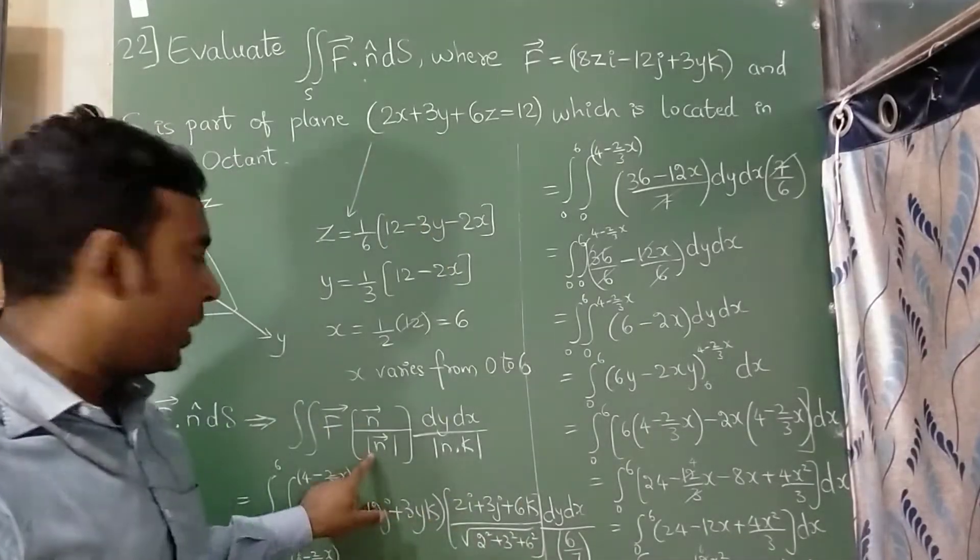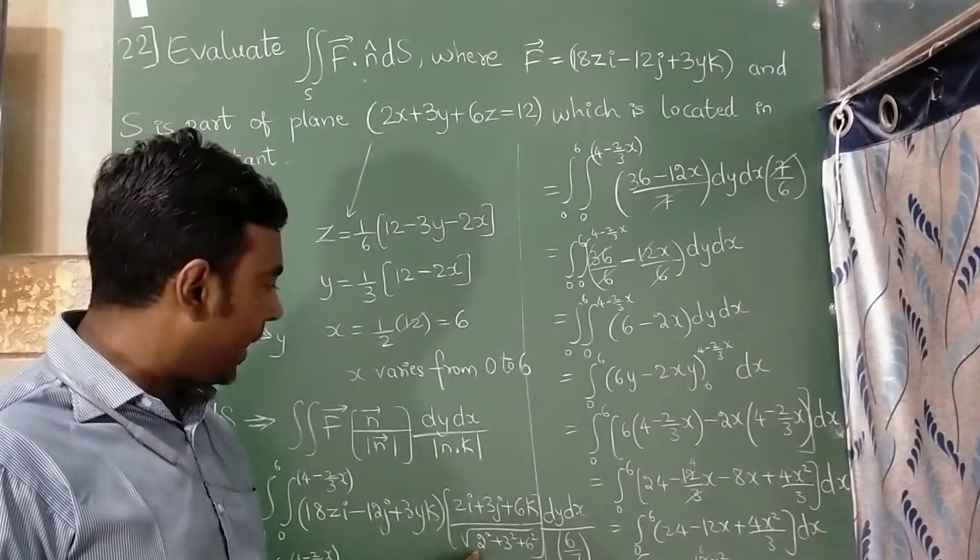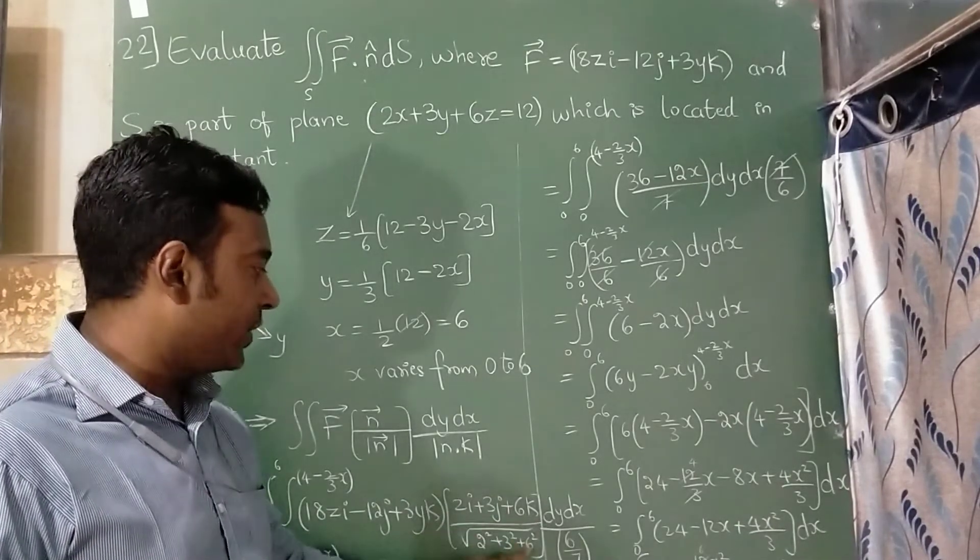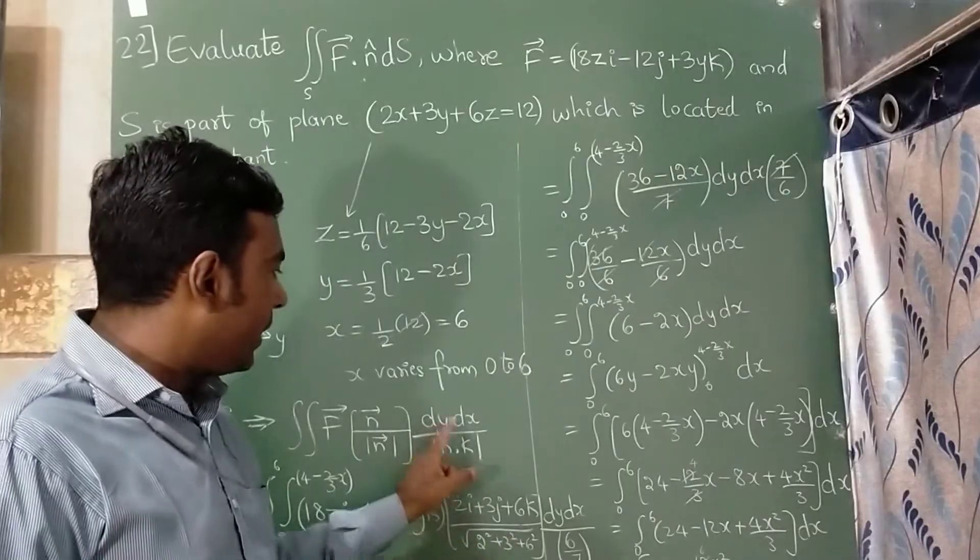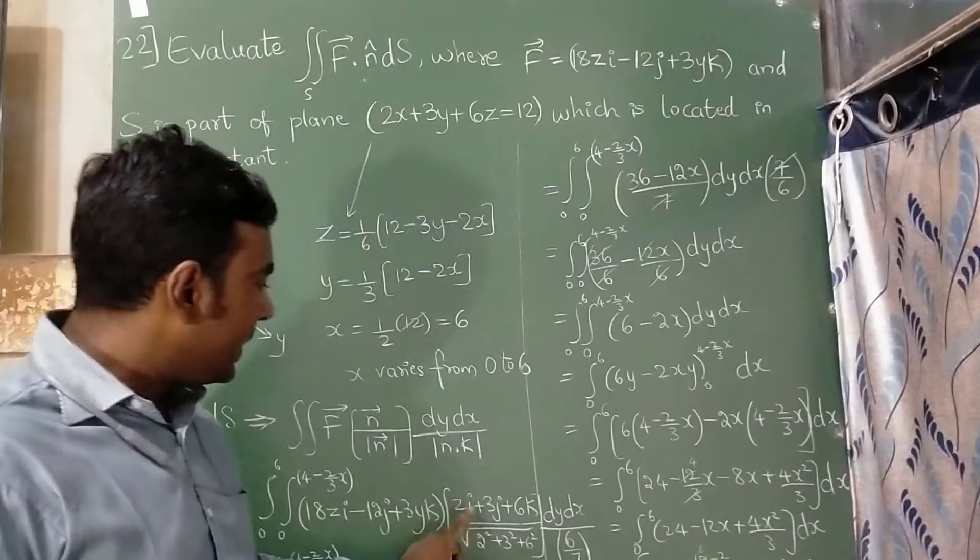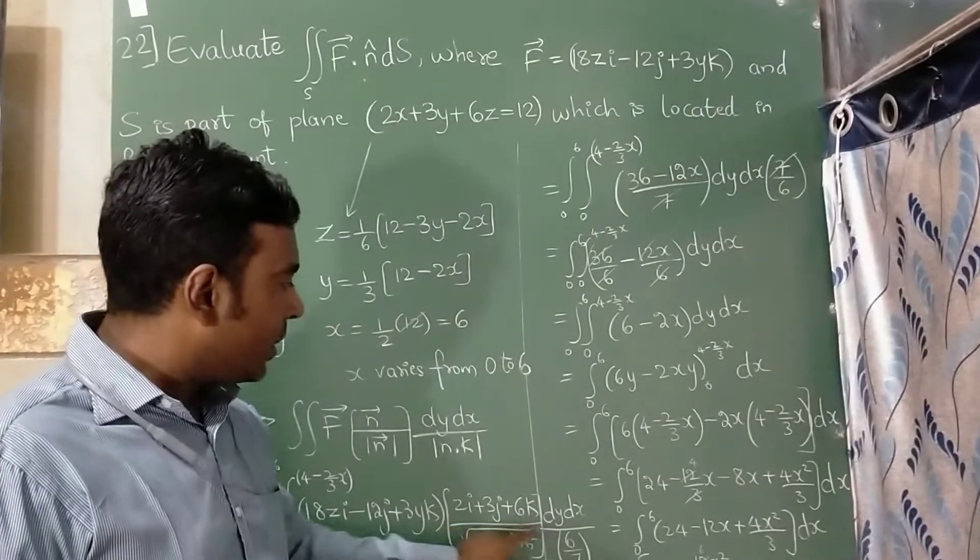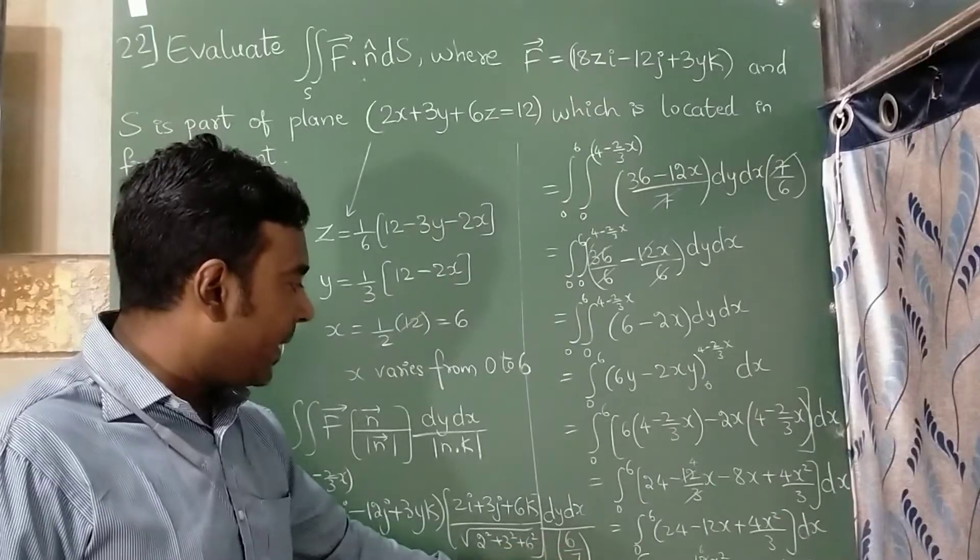Divided by modulus is nothing but square root of coefficient 2 square, coefficient 3 square, coefficient 6 square. Now dy dx I have written here. Now modulus of n k, you can see here i, j, k. So k, the coefficient is 6. So I have written here 6 divided by 7.